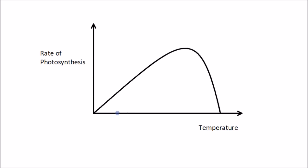The third and final graph is for temperature. Temperature increases along the x-axis and rate of photosynthesis is on the y-axis. As we increase the temperature, the rate of reaction increases quite steadily, because the particles involved have more energy, collide more often, and therefore the rate of photosynthesis increases. However, the temperature reaches an optimum, and then beyond that, if the temperature gets too high, the enzymes that control the photosynthesis reaction become denatured.